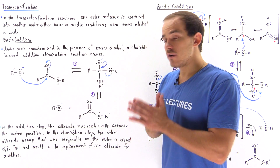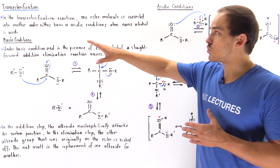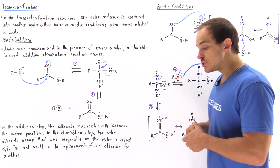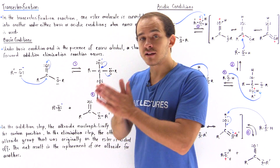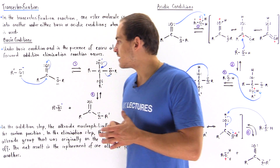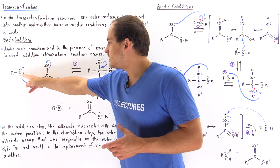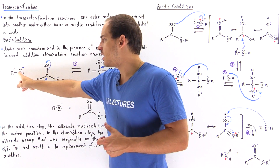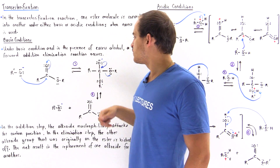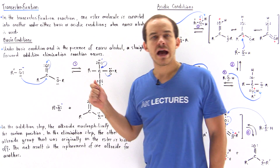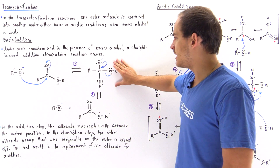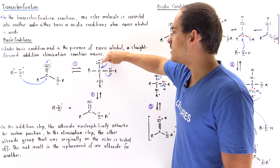Let's begin our discussion of the reaction mechanism for transesterification under basic conditions. Under basic conditions, in the presence of excess alcohol, we have the alkoxide molecule that acts as the nucleophile, attacking this carbon, forming a bond between oxygen and carbon, displacing the pi bond and placing it onto this oxygen. So in step number one, we have the addition reaction taking place in which we form this tetrahedral intermediate ion that has a negative charge on this oxygen.